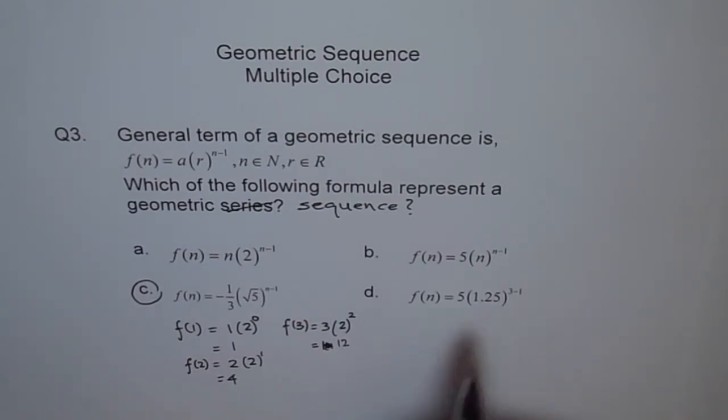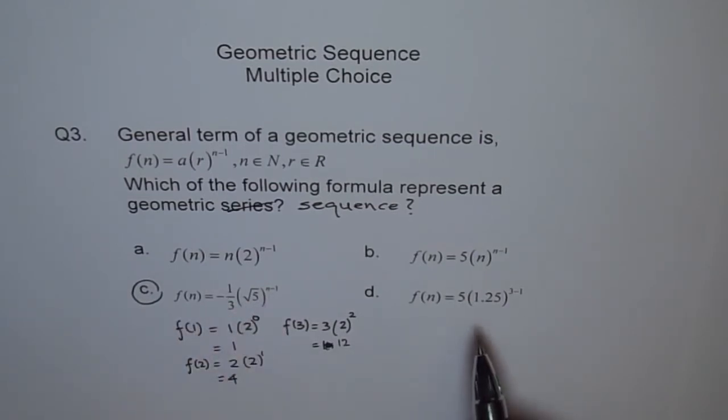So therefore, the option is C: f(n) equals minus 1 over 3, square root 5 to the power of (n minus 1). You have to take care. So this exponent should have been a variable, it is a constant. Do you see that? We cannot have a variable at these two places as n which varies. Do you understand?